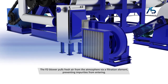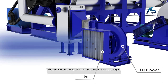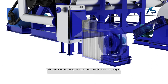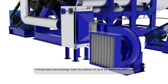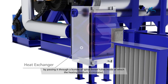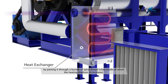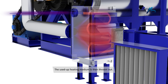The FD blower pulls fresh air from the atmosphere via a filtration element, preventing impurities from entering. The ambient incoming air is pushed into the heat exchanger. A fin tube heat exchanger heats the ambient air up to the desired temperature by passing it through a bundle of spiral fin tubes, inside of which the heating medium is circulated.